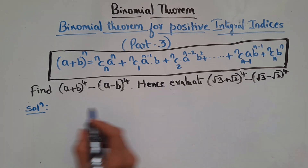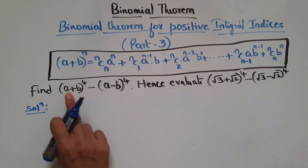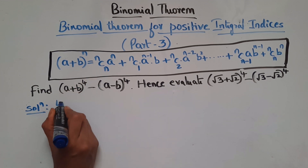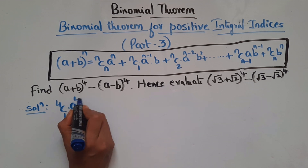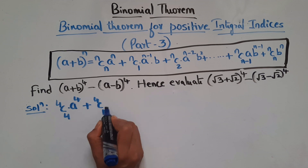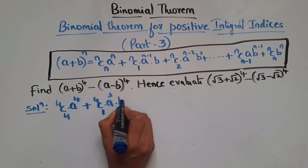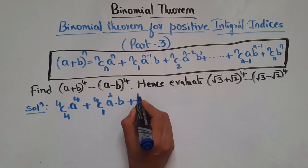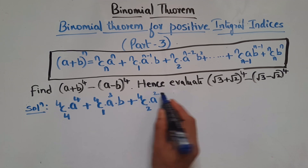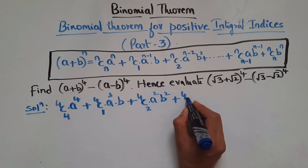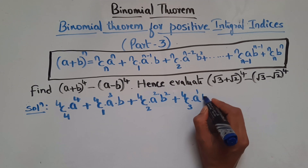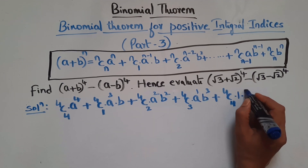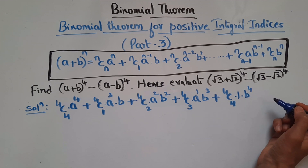Now (a + b)⁴ is of the form (a + b)^n where a is a, b is b, and n is 4. So expanding using the binomial formula: 4C0·a⁴ + 4C1·a³·b + 4C2·a²·b² + 4C3·a¹·b³ + 4C4·b⁴. Here a's power is decreasing and b's power is increasing.